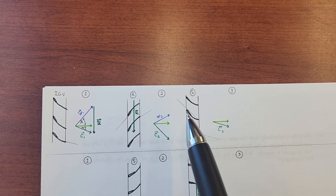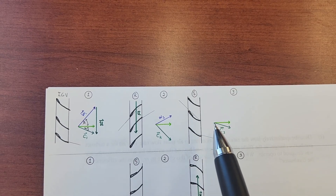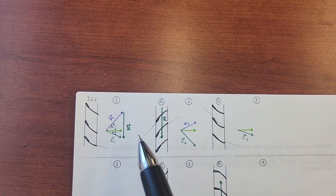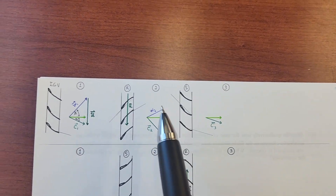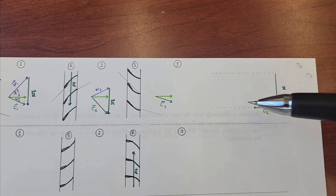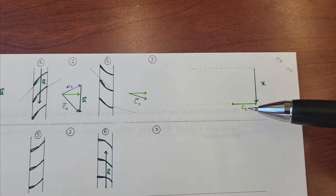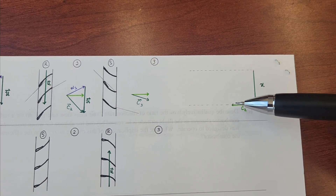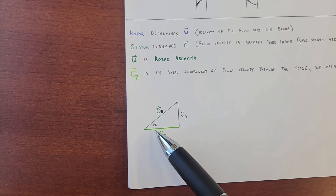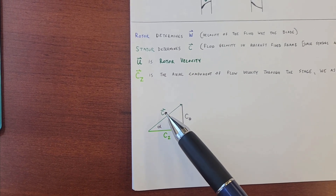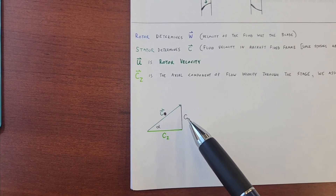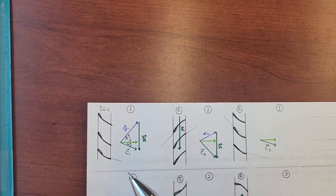Since we're assuming there's nothing after this stage, this shows there's going to be no W component here — you're going to have aircraft-fixed velocity. The air is coming out at this angle but there's still an axial component going in this direction. Alpha is the angle between the axial flow velocity CZ and your C vector, which is the aircraft-relative velocity. This component is your C theta, and that's going to be important for what we're about to do.